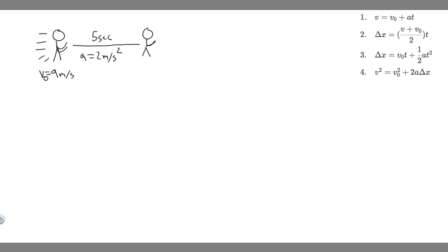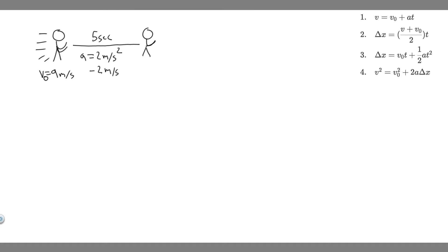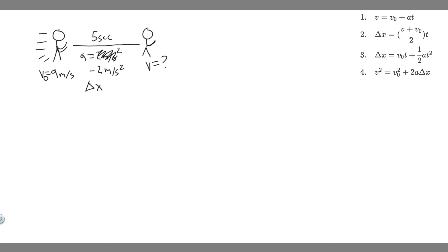The first thing you always want to do when solving kinematic problems like this is draw what's going on. So we have this runner, and she's going to be traveling at 9 meters per second. In this interval, her initial velocity is 9 meters per second. For the next 5 seconds, she's going to decelerate. Her acceleration is going to be equal to negative 2 meters per second squared because she's decelerating. She's going to reach some final point with an unknown velocity and travel some unknown distance, delta x.